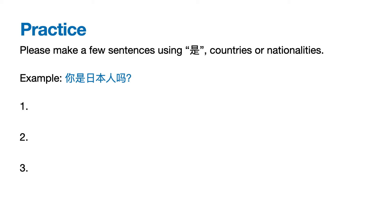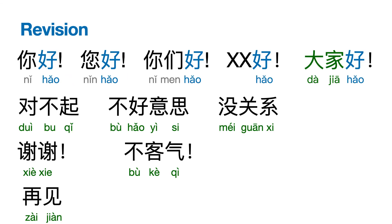Now we are going to do a revision of lesson two, which is greetings. Let's start from the top left. Hello: 你好, 您好, 你们好, Andrew好, 大家好. Sorry: 对不起. Excuse me: 不好意思. It's okay: 没关系. Thank you: 谢谢. You're welcome: 不客气. See you again: 再见.